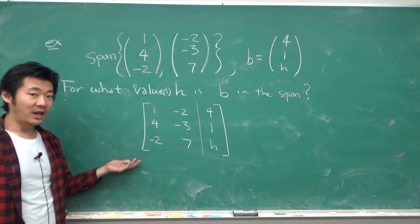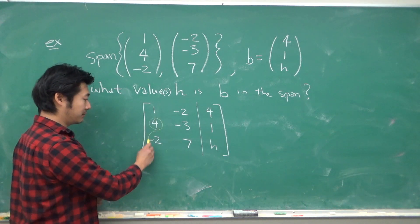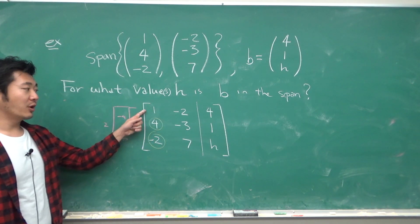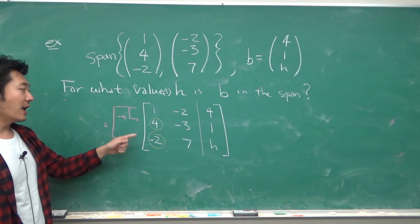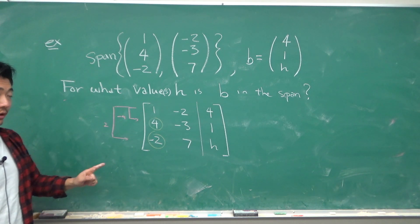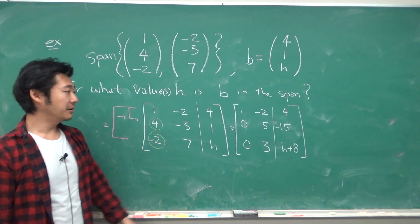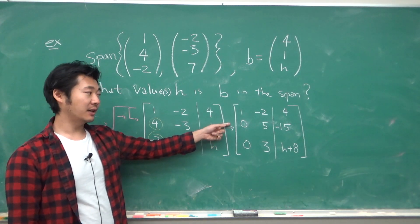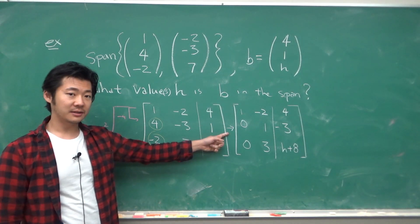So now let's bring it to echelon form. To do so, we want to get rid of these two. And so we will multiply the top row by negative 4 and add it into the second. And then we will multiply the first row by 2 and add it into the third. When you do that, you get something like this. Now let's divide the second row by 5 so that we get something like this.